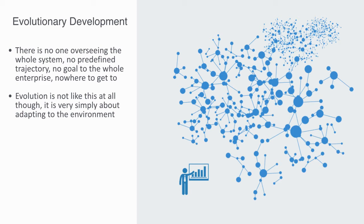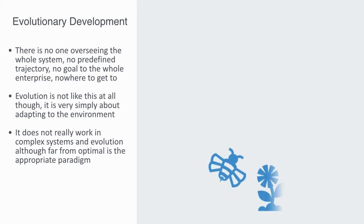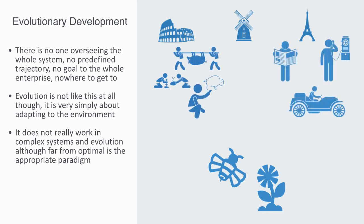It is a legacy of having previously operated within a much simpler environment. It does not really work in complex systems, and evolution, although far from optimal, is the appropriate paradigm. Whereas adaptation is a micro level phenomena in that it describes how an individual agent can change in response to some change in its environment.